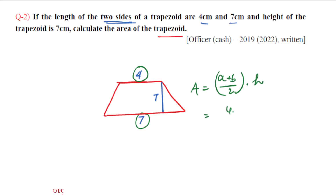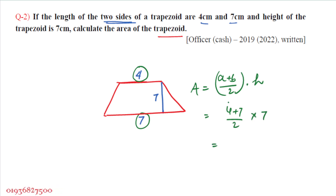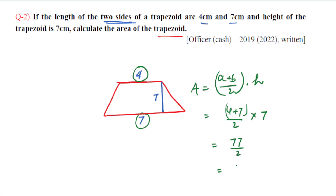Applying the formula: a is 4, b is 7, so (4 plus 7) divided by 2, multiplied by height 7. That gives us 11 divided by 2, multiplied by 7, which equals 77 divided by 2, giving 38.5.